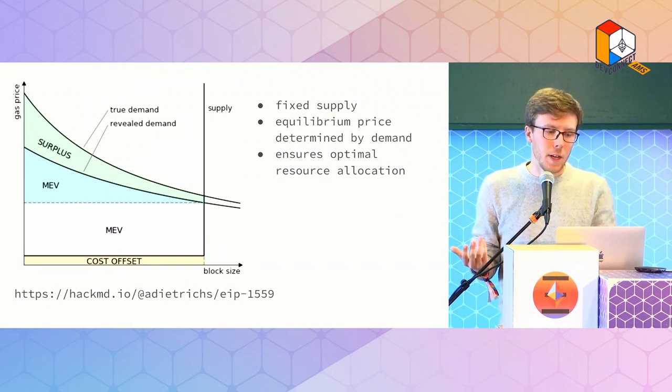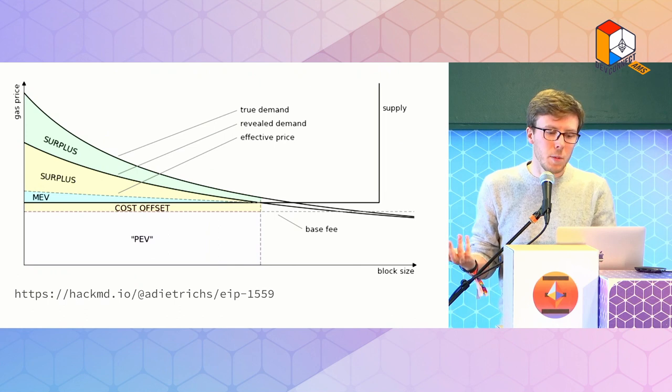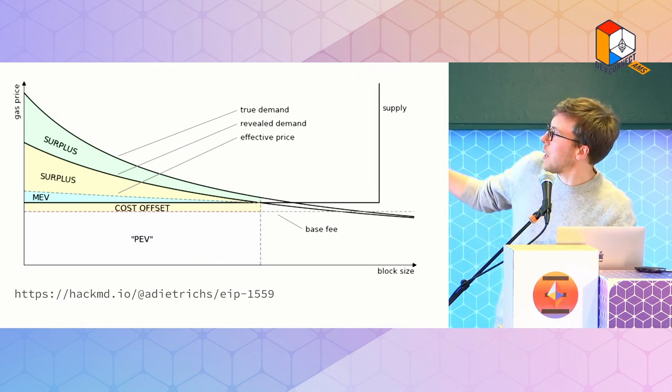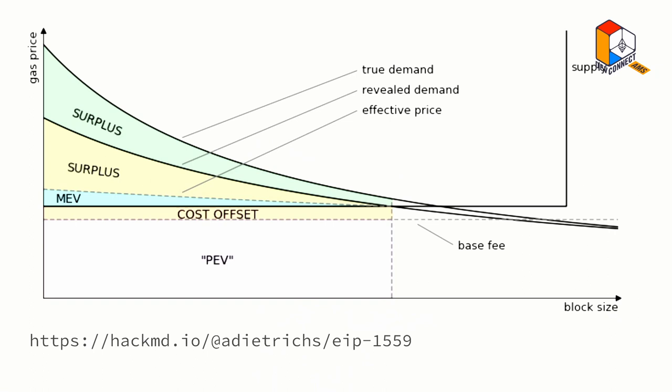With EIP-1559, this looks a little more complex — supply is still fixed, of course. Because supply is fixed, that's actually the intuition for why under 1559 we were able to burn the fees, because they're not needed to motivate the miner to include the transaction. So we can instead basically turn them into protocol extractable value in a sense.